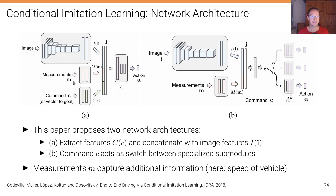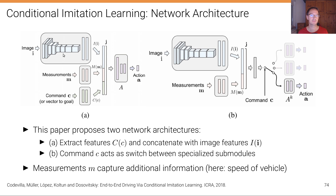The measurements m in this paper were just the speed of the vehicle, which is a useful input. If only a single image is provided, the decision-making algorithm wouldn't know whether the vehicle is standing still or moving, so providing speed as input is important.